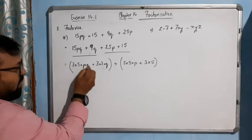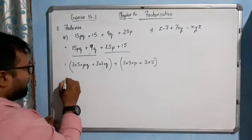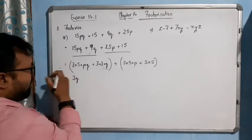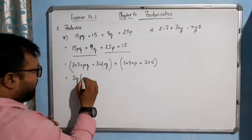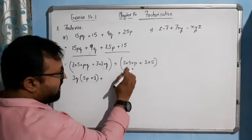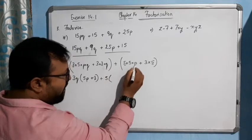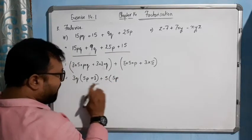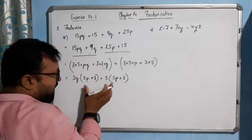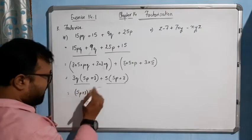So it becomes 5P plus 3 left behind. Here also, if we take 5 common, 5P plus 3 is left behind. See — if we take 3Q common, what is left behind is 5P plus 3. And here, 5 is common, so we take 5 as common, and what is left behind is 5P. See — the first term of the first bracket 5P is matching, then plus 3 — the second term also matches with both brackets. Now from these two parts we take 5P plus 3 as common.